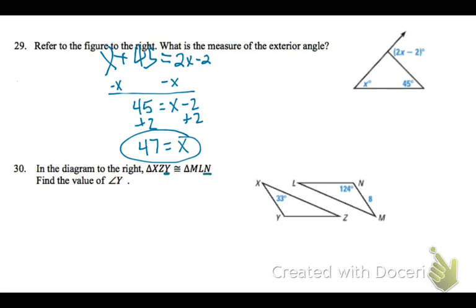Okay, on number 30, y and n are in corresponding parts of congruent triangles, therefore, y must equal 24.